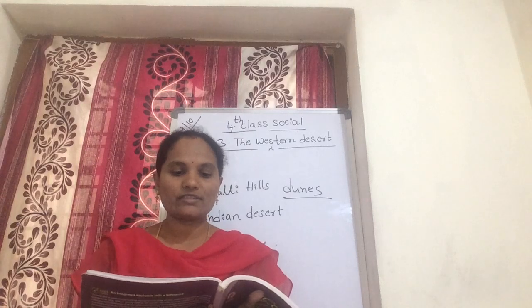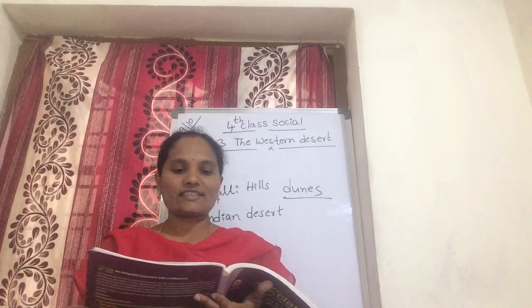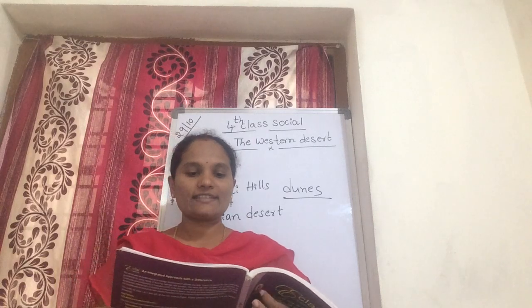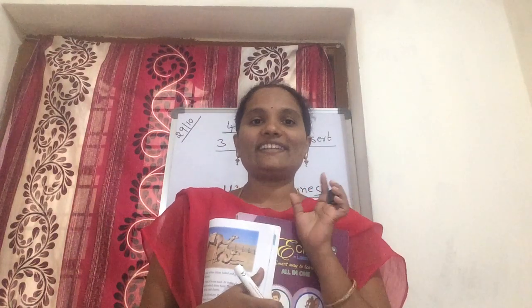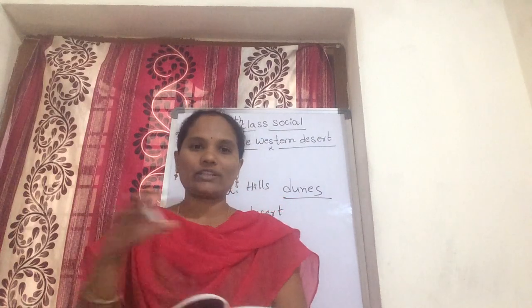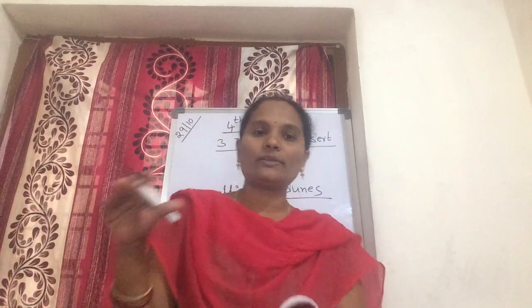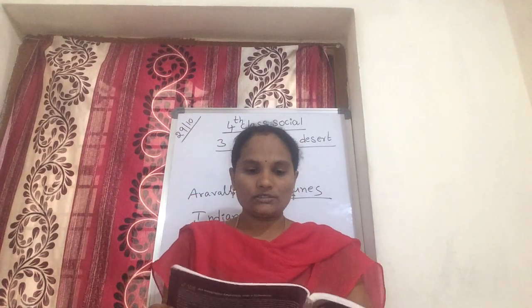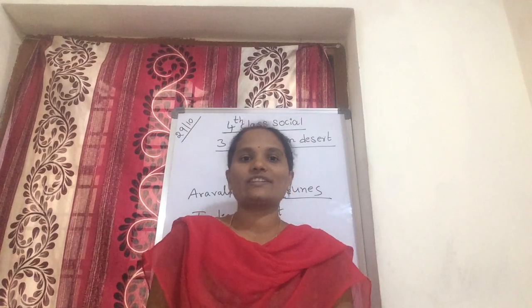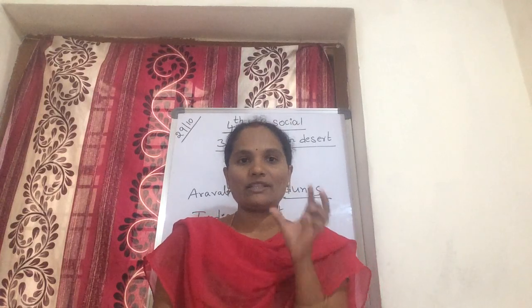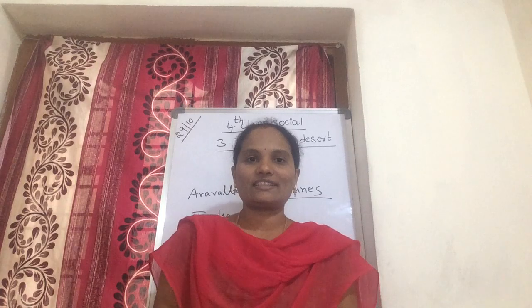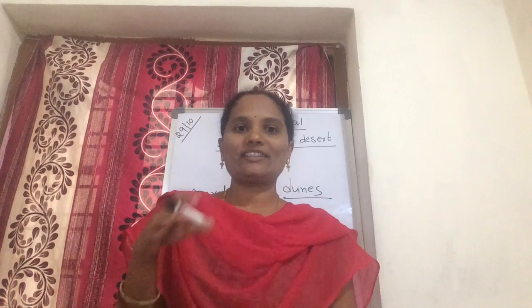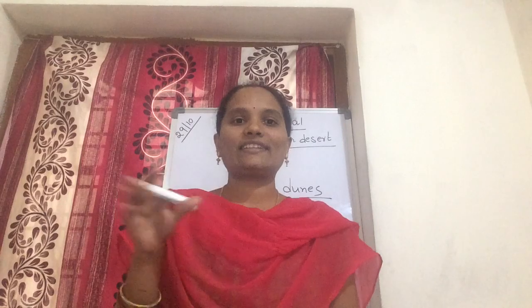Vegetation is limited to scattered thorny bushes. It is difficult to build roads and railway lines in a desert, because the total area is covered with sand and sand will keep covering the roadways and railways. So it is not possible. Camels are the chief mode of transportation in the desert. Because there are no roads or railways, we use camel transportation.